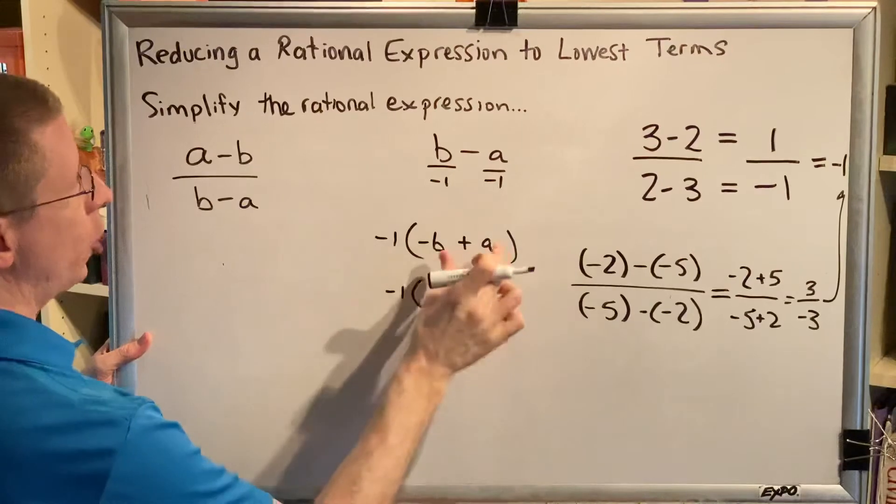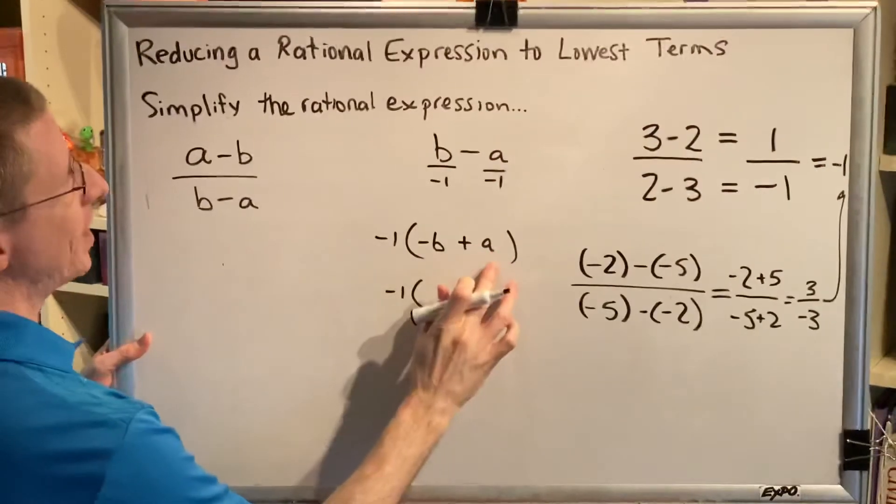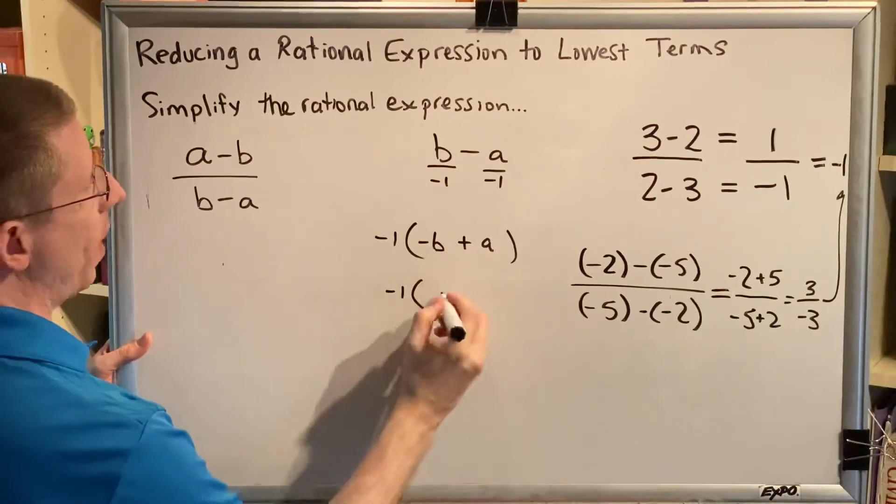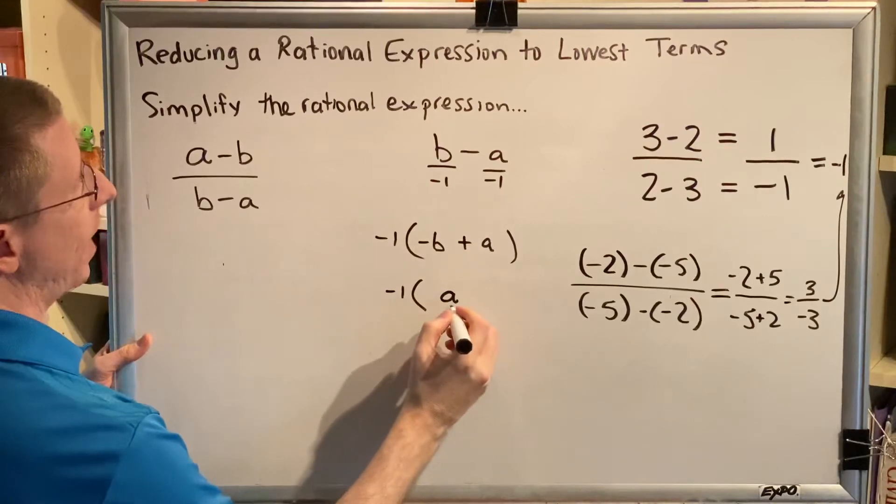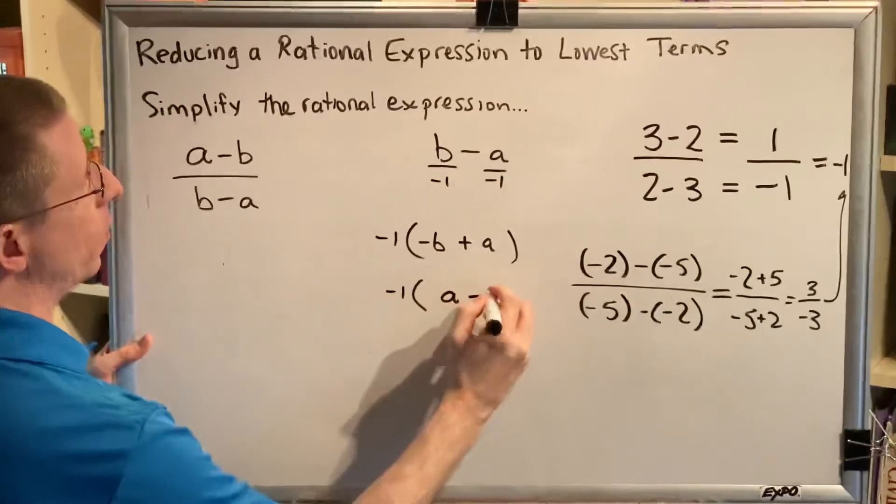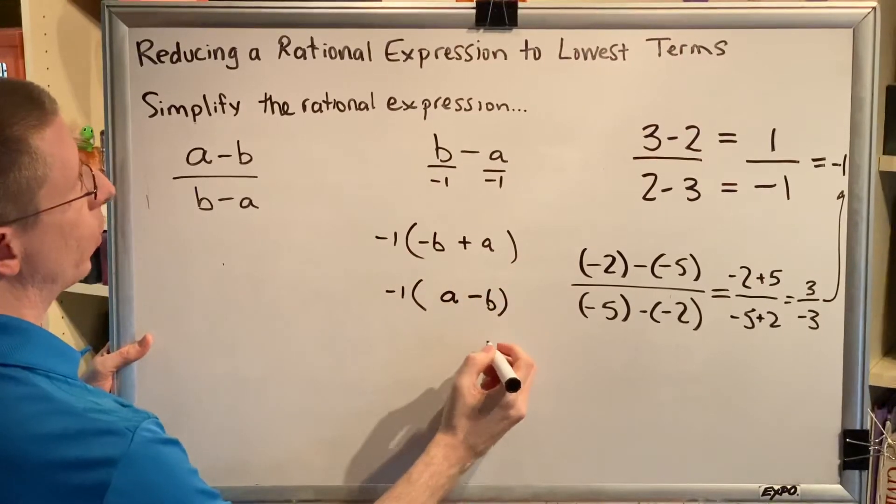Now, these are in the wrong order, so we can swap them. Remember, when a term changes order, it keeps the sign that it has. This a is positive, so when it moves to the front, it stays positive. And when this b moves to the back, it stays negative.